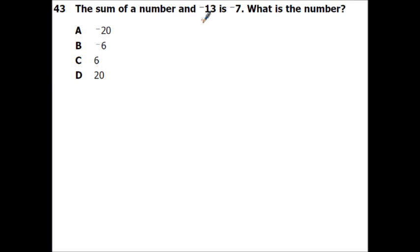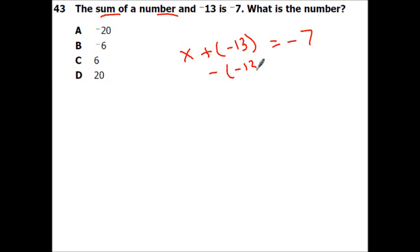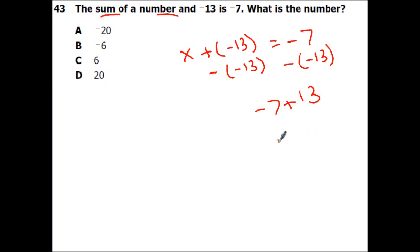The sum of a number and negative 13 is negative 7 — what is the number? Sum means plus, so: x plus negative 13 equals negative 7. Subtract negative 13 from both sides — change to adding positive 13. Negative 7 plus 13: different signs, so subtract — that's 6. Keep the sign of the one with bigger absolute value: 13 positives, 7 negatives, so the answer is positive 6.